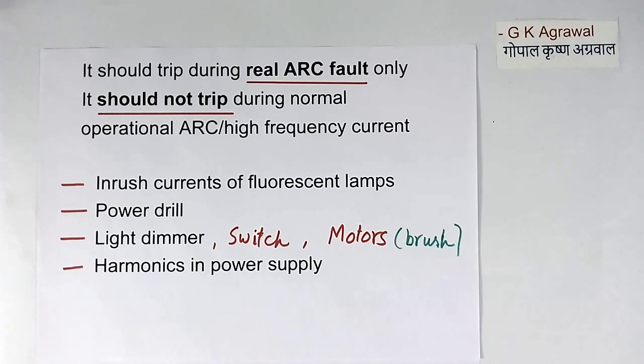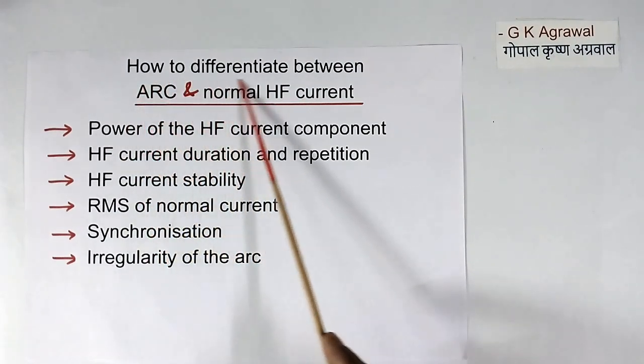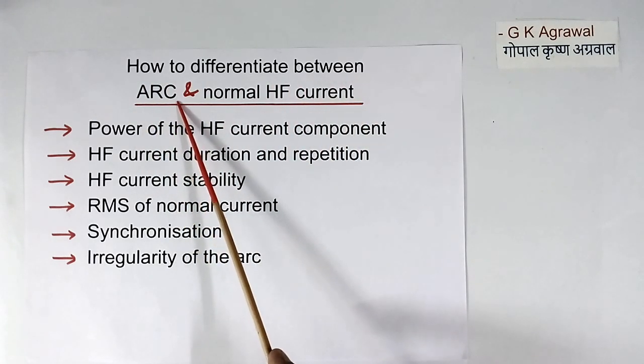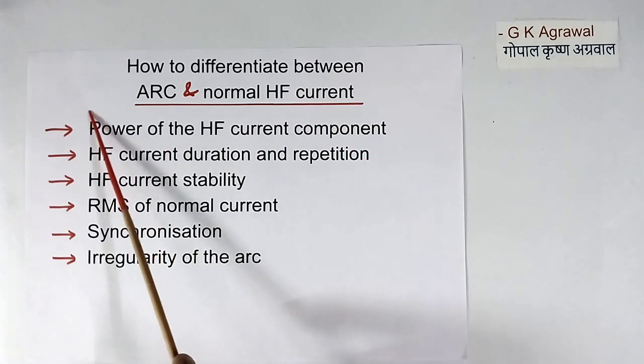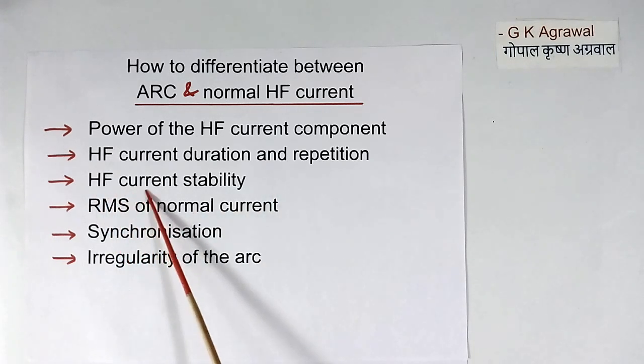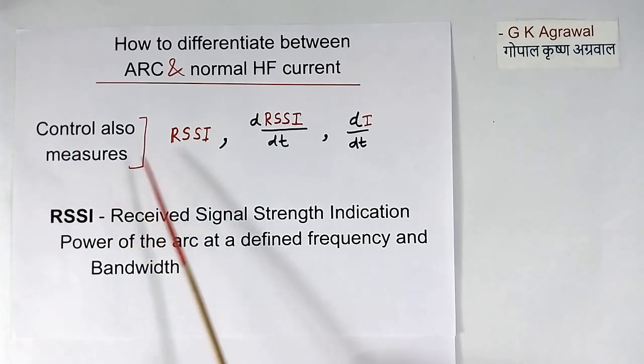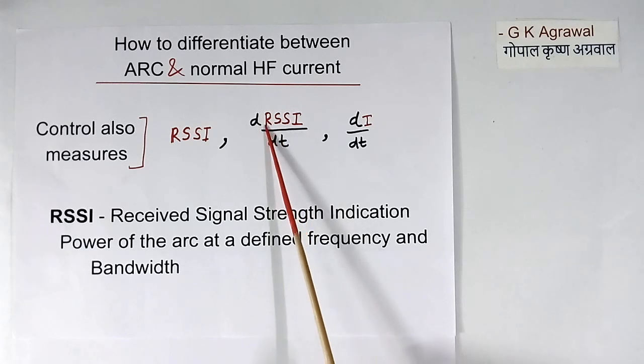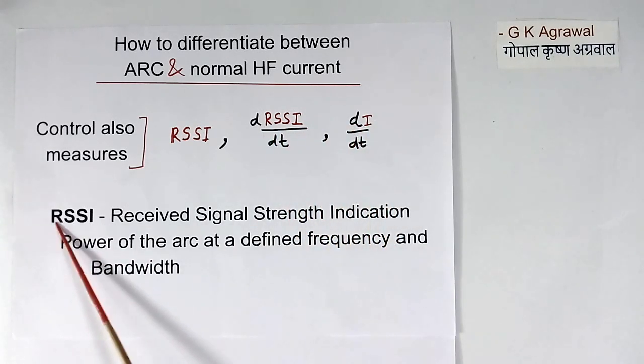How to differentiate between arc high frequency current and normal high frequency current? So controller measures all these things: power of the high frequency current component, high frequency current duration and repetition, high frequency current stability, RMS of normal current, synchronization and irregularity of the arc. Controller also measures RSSI, d/dt RSSI, and dI/dt. RSSI means received signal strength indication. Today I will not discuss about this in detail.